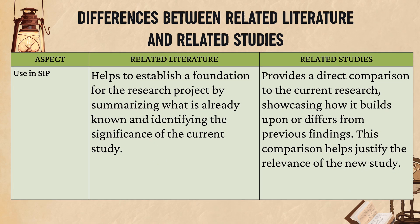In an SIP, related literature helps establish a foundation for the research project by summarizing what is already known and identifying the significance of the current study. While related studies provide a direct comparison to the current research, showcasing how it builds upon or differs from previous findings, which helps justify the relevance of the new study.